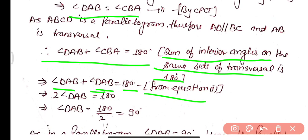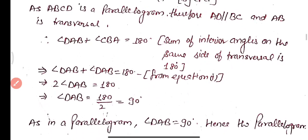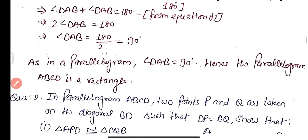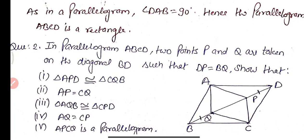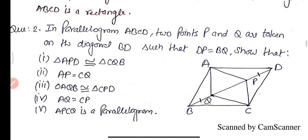Since angle DAB equals angle CBA, we substitute to get angle DAB plus angle DAB equals 180 degrees, so 2 times angle DAB equals 180, giving angle DAB equals 90 degrees. In a parallelogram, if one angle is 90 degrees then all angles are 90 degrees, hence parallelogram ABCD is a rectangle.